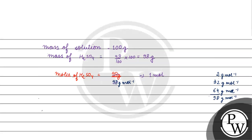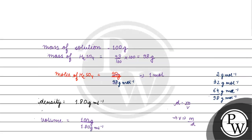Now we need the volume of solution. Since we are working per 100 grams of solution (from the 98% by mass), mass of solution is 100 grams. Density is 1.80 gram per ml, and density = mass / volume, so volume = mass / density = 100 / 1.80 = 55.55 ml.